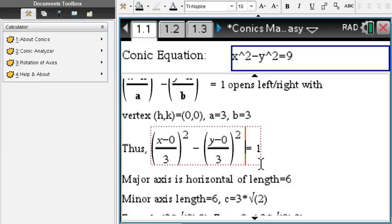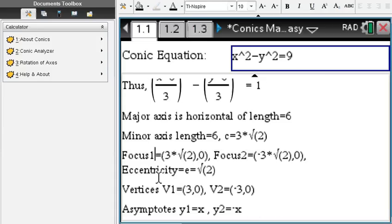So if you change it to x² - y² = 9, everything changes dramatically. All of a sudden we have a hyperbola. So this hyperbola opens to the left and right and has a vertex still (0,0).